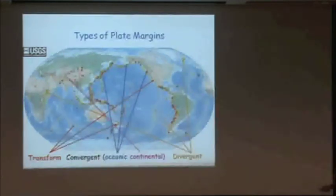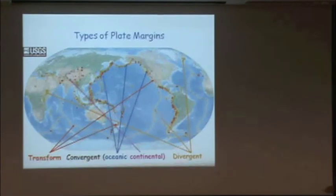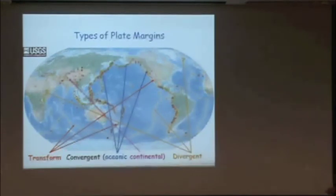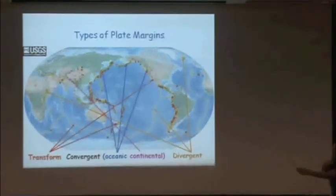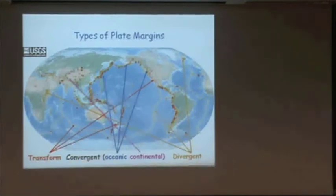Plate tectonics theory tells us there are three kinds of plate boundaries. The transform boundaries, like our boundary in California, like much of what we see in New Zealand, and like little segments along the ocean ridges, are where the plates are slipping past each other. If we look down on it, we see one plate going past the other plate, like cars passing on a road.